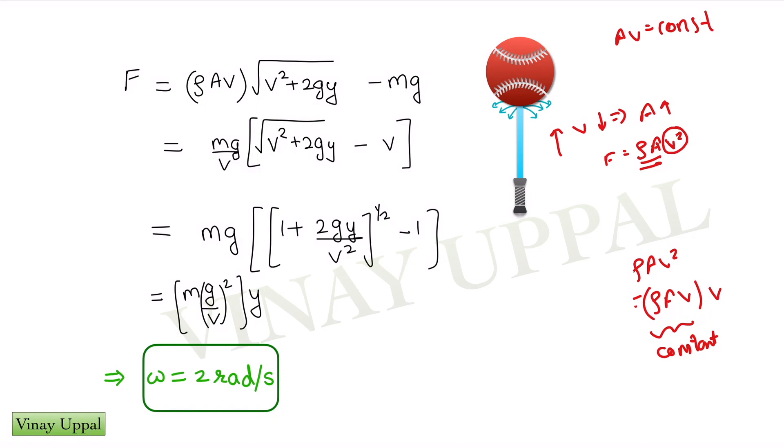Now suppose I displace the sphere downwards by a small displacement y. The speed of the water striking the sphere is going to be square root of v² plus 2gy. This is simply a free fall equation. And therefore, my force equation will be ρAv times root of v² plus 2gy. ρAv is a constant minus mg. I am going to use the equilibrium equation that we had found out that ρAv² is mg. So I am going to substitute ρAv as mg by v. And then this will be my equation.